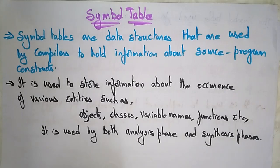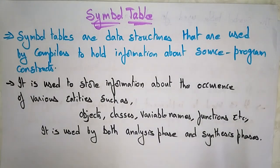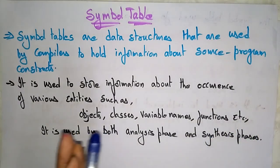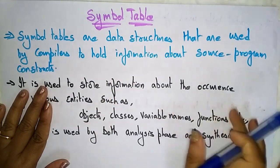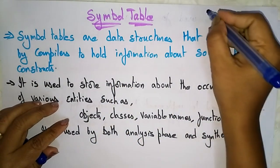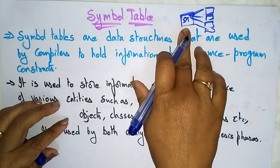Welcome back students. Coming to the next topic in compiler design, the symbol table. The symbol table is one of the important concepts in compiler design. It acts as a supporting module for all the phases. There are different phases in the compiler — the lexical phase, syntactic phase, semantic phase, intermediate code generation, code optimization — and everything depends on the symbol table. All the phases are connected to the symbol table.